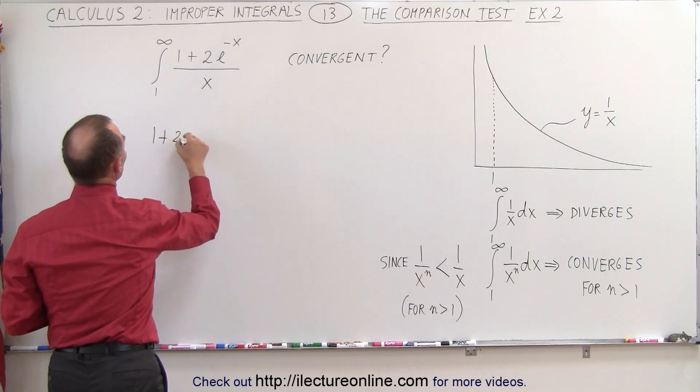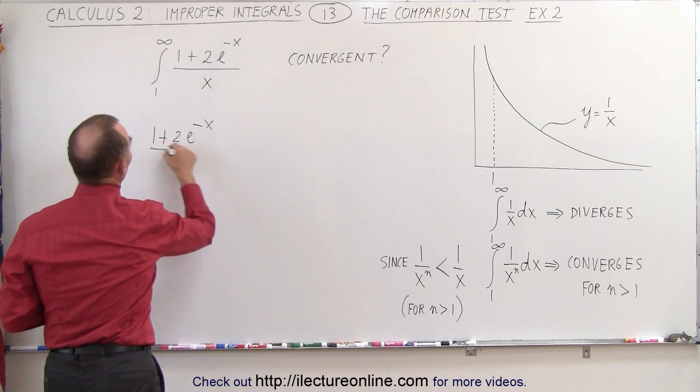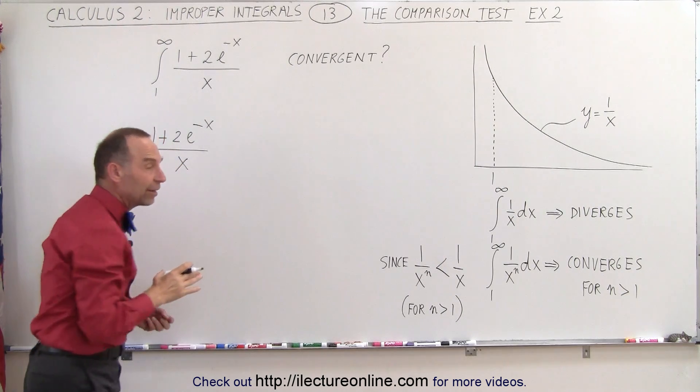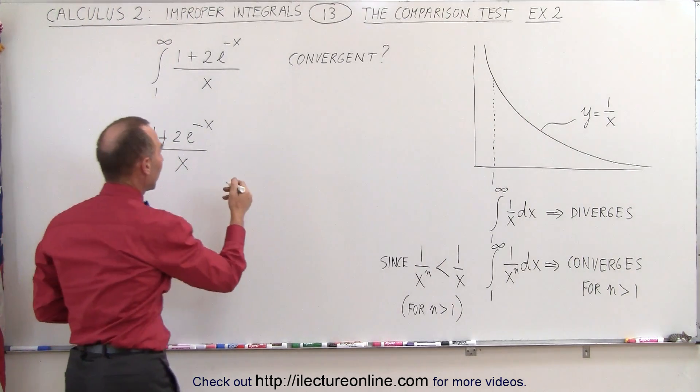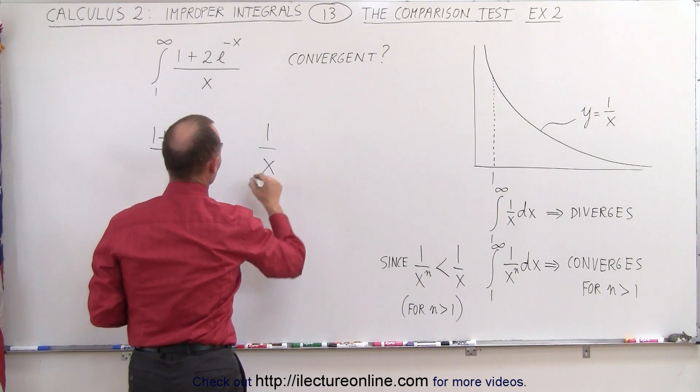So 1 plus 2e to the minus x over x for all values from x equals 1 to infinity. Is that greater or smaller than 1 over x?